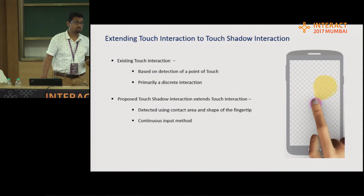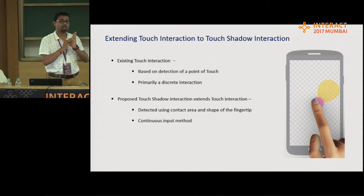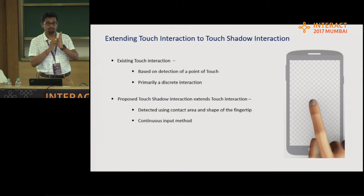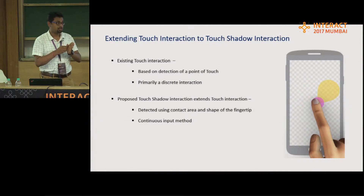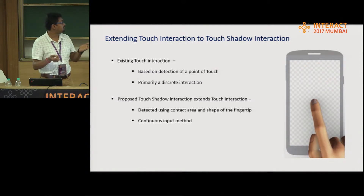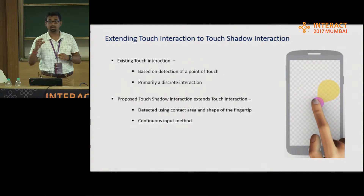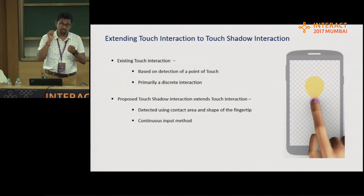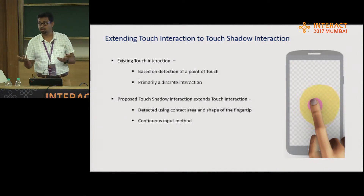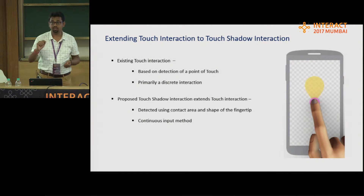How Touch Shadow works is, instead of a point, it works based on the total surface area which gets in contact with the capacitance screen. There is another property: it is now a continuous input gesture. The existing touch gesture is discrete — if there is an interaction element on the screen, such as a button, it is either pressed or not pressed. However, we are trying to do it in the form of a continuous input.